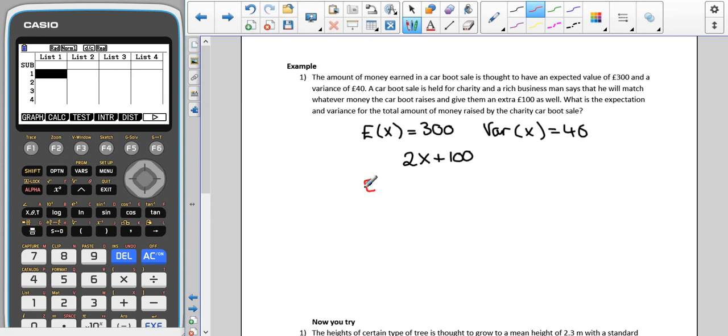So we're having to find the expectation of 2X plus 100. From the previous page, we know that means we would have 2E of X plus 100. We know that E of X is 300, so that means we would have 2 times 300 plus 100, which means we would be expecting to raise 700 pounds.